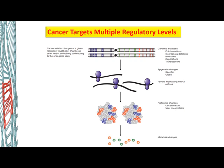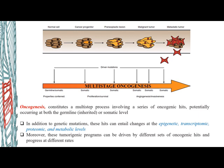There can be point mutations, insertions, deletions, inversions, duplications, epigenetic changes, and microRNAs. Ubiquitination can also happen. All these changes lead to continuous growth factor signaling in the cell. Cancer is a multi-stage process — it will take years for cancer to develop. Whether it is chemical- or radiation-induced, or normal body mutations, it is a long process from normal cells to a metastatic tumor, involving epigenetic, transcriptomic, proteomic, and metabolic changes at all levels.